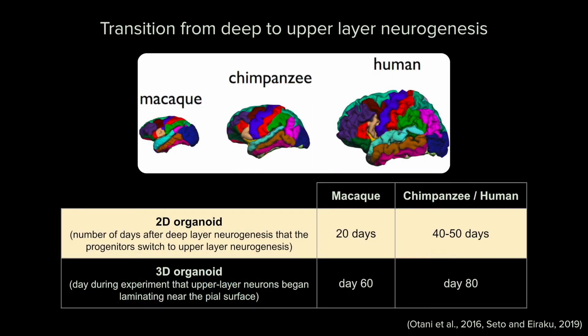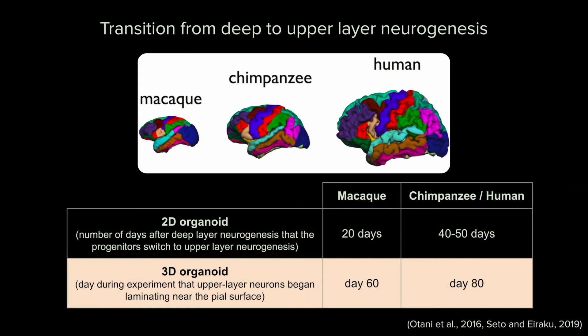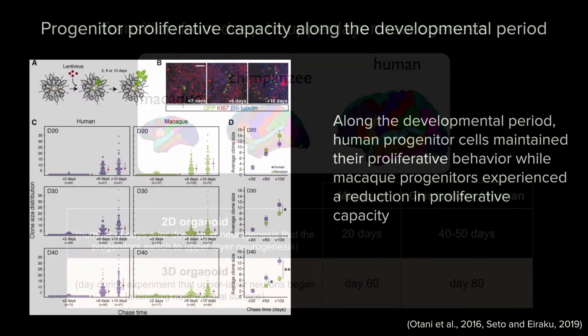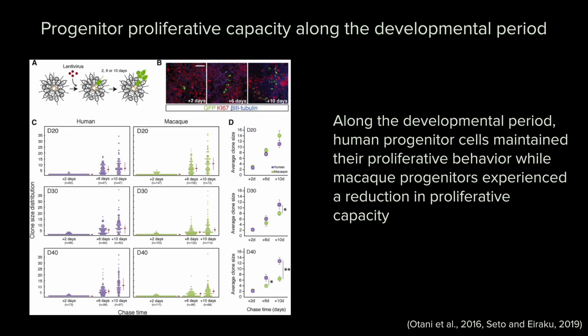A 2D organoid study produced yet another human-specific aspect of cortical development timescales, finding that the progenitor transition from deep layer to upper-layer neurogenesis occurs later in chimpanzees and humans than in macaques. A 3D organoid experiment confirmed these findings, noting that upper-layer lamination began on day 60 for macaques, while chimpanzee and human organoids began upper-layer lamination later on day 80. The same experiment demonstrated that human progenitor cells maintain their proliferative capacity at later stages, while macaque progenitor cells experienced a decline.